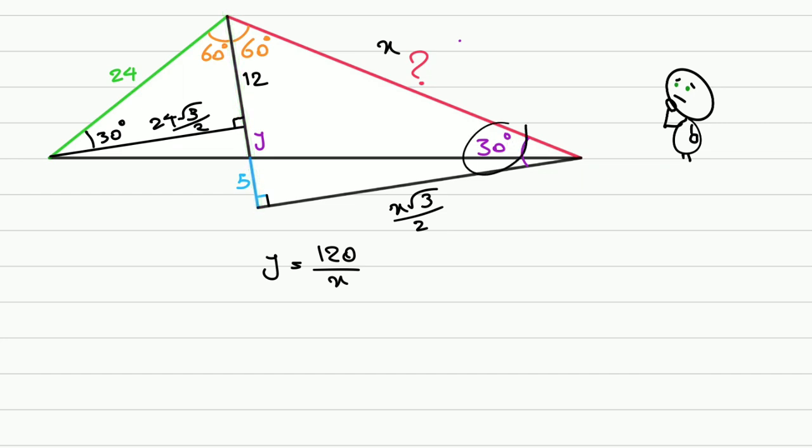Take a look at this segment again. It was x times sine of 30 degrees, or x over 2. So 12 plus y plus 5 is x over 2. Let's replace what we have: 17 plus y, which is 120 over x, equals x over 2.